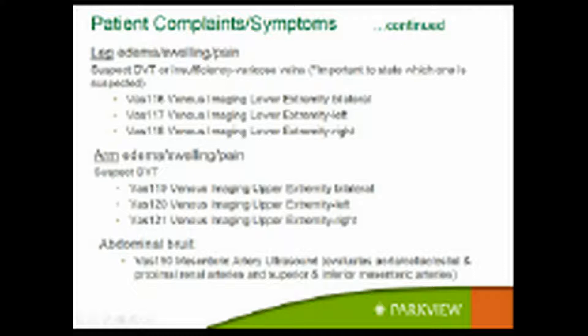For leg edema, swelling, pain, or suspected DVT or insufficiency, it's important to state which one. Insufficiency studies take longer and often need two people. We first rule out a DVT because DVT trumps insufficiency — if they have a DVT we address that first. With no DVT found, we stand the patient and put a blood pressure cuff around the calf or ankle, place the ultrasound probe over the vein, squeeze and release. When we squeeze, blood flow shoots up, and if the valves are working, that blood flow stops and does not flow back down to the leg.